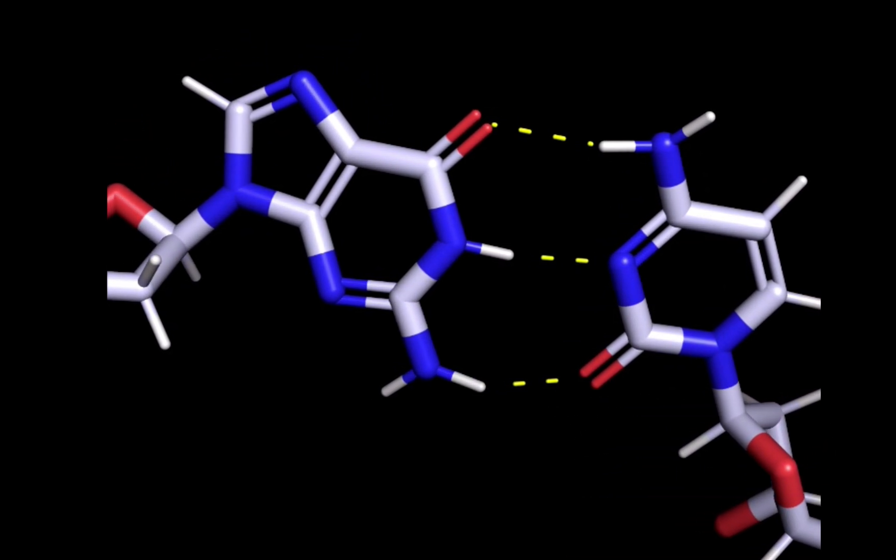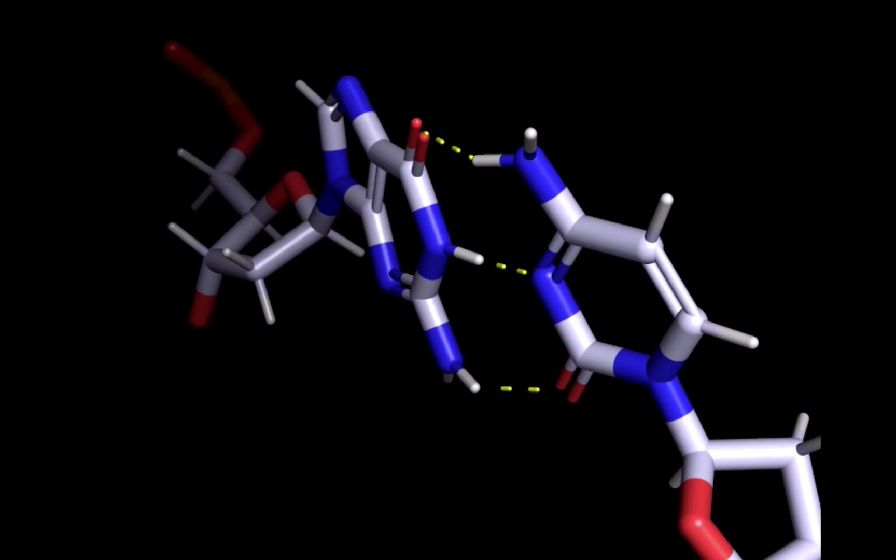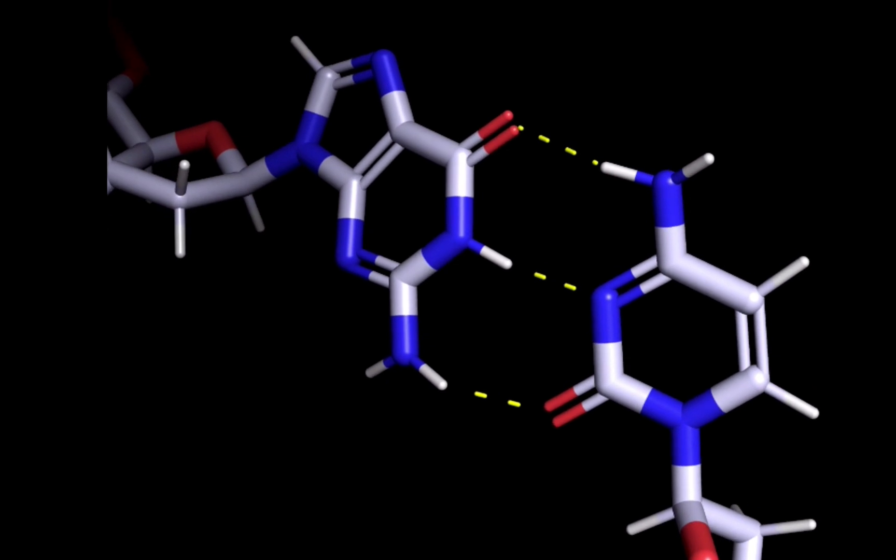And DNA that is rich in G and C base pairs comes apart at the hydrogen bonds, or melts, at a higher temperature experimentally.